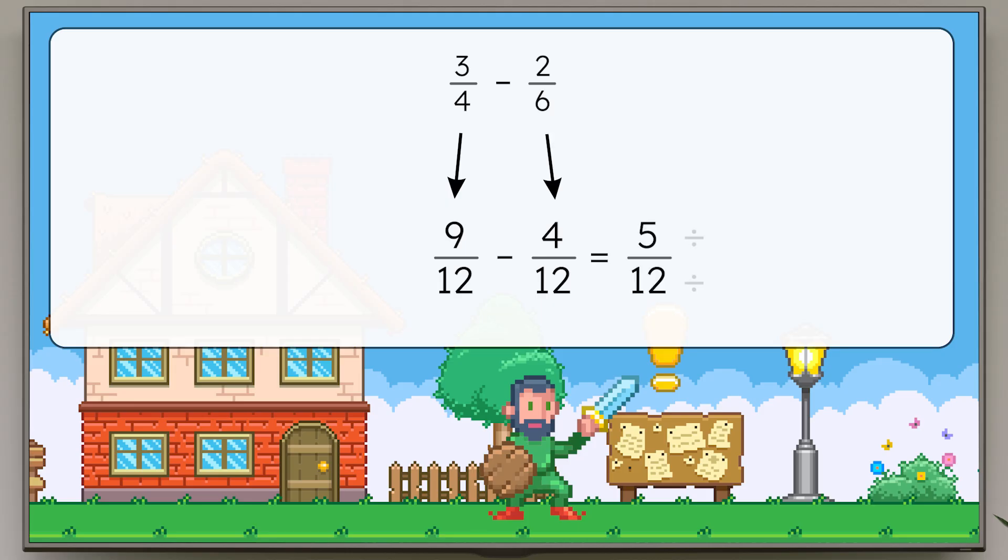Is that in simplest form? Yes. Five and twelve only have one as a common factor.